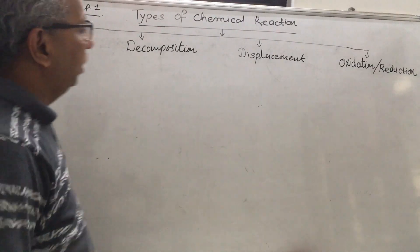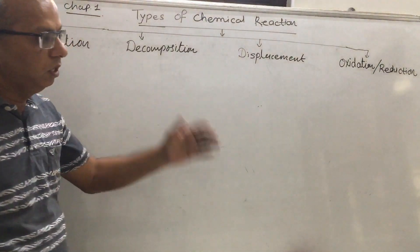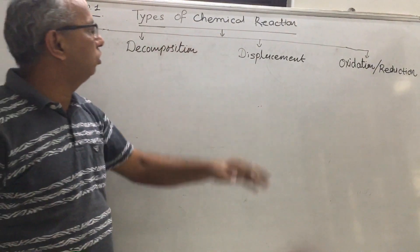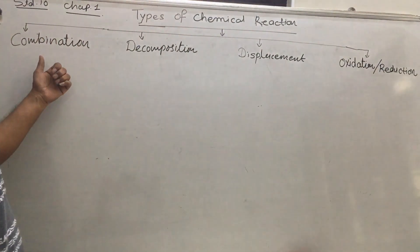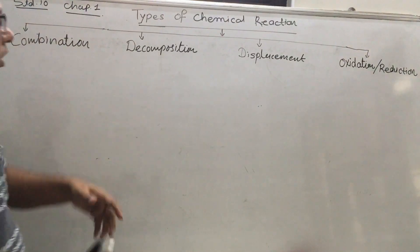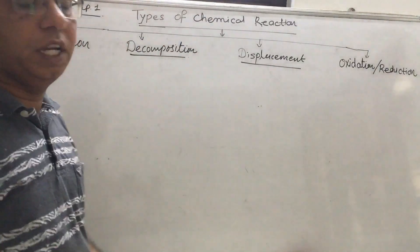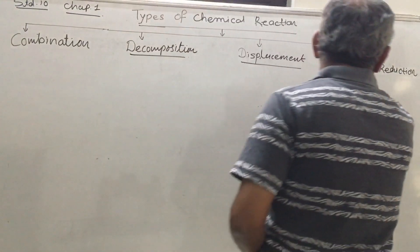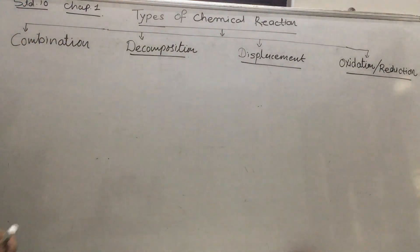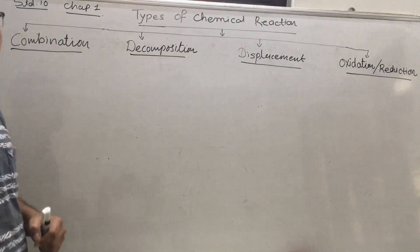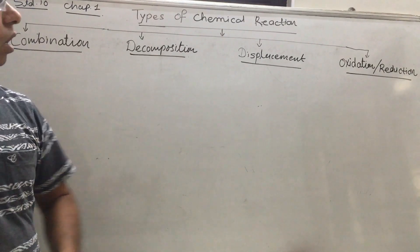Hello friends, yesterday we started chapter number one: Chemical Equations and Chemical Reactions. Today we are going to learn about the types of chemical reactions. There are four important types in total, and we will learn about all of them one by one.